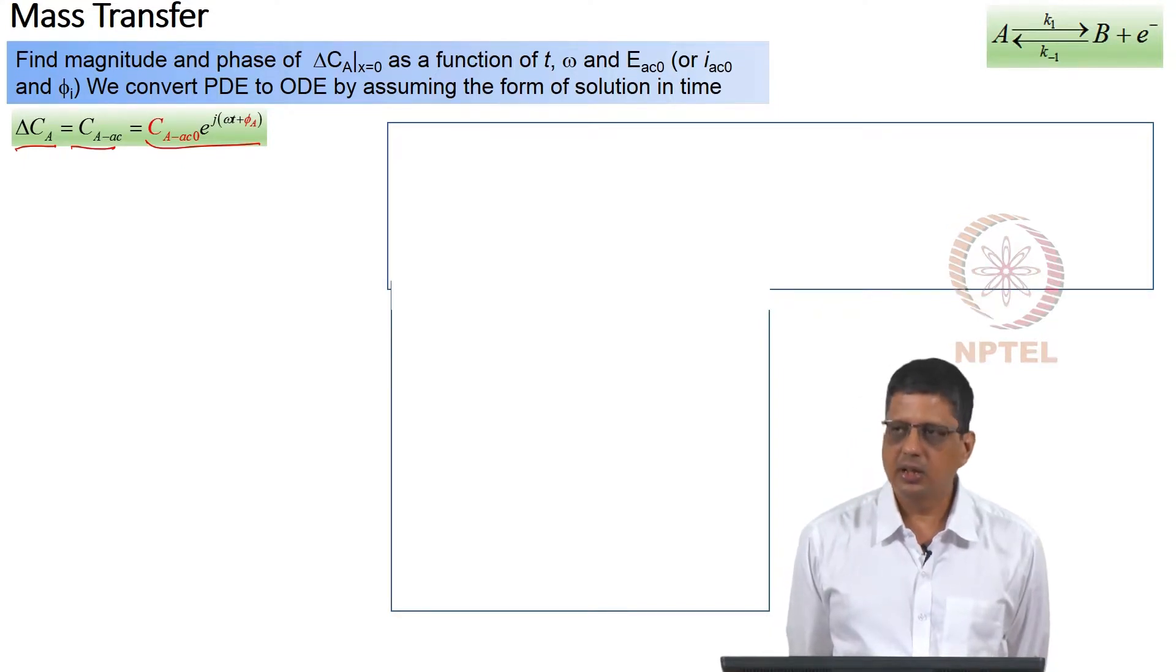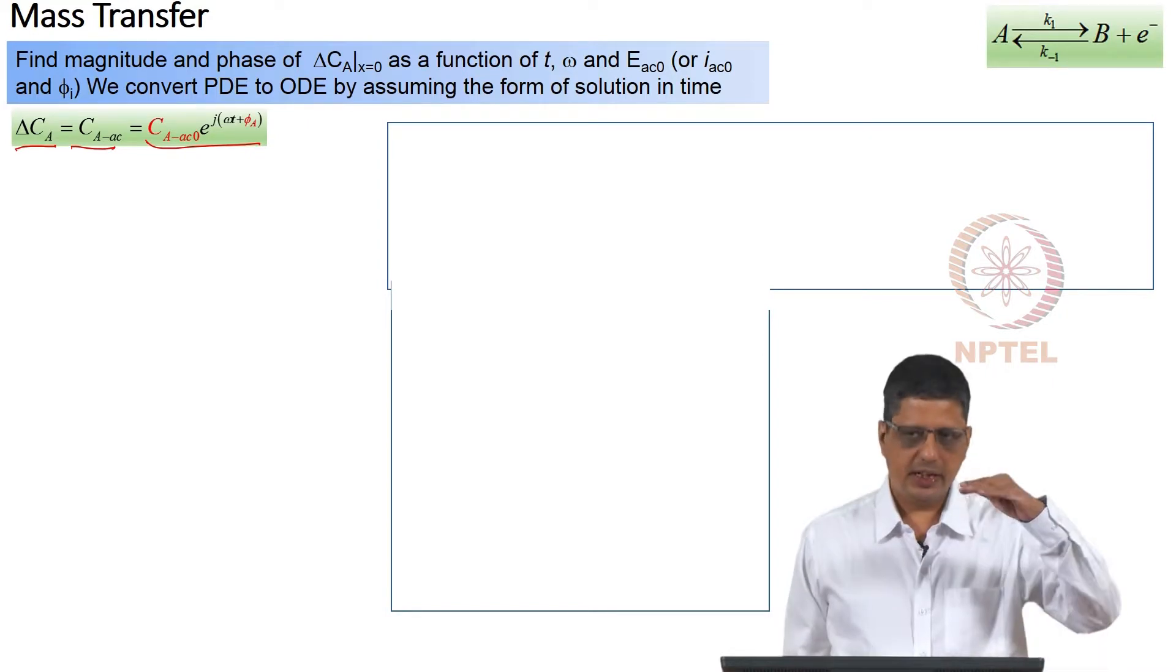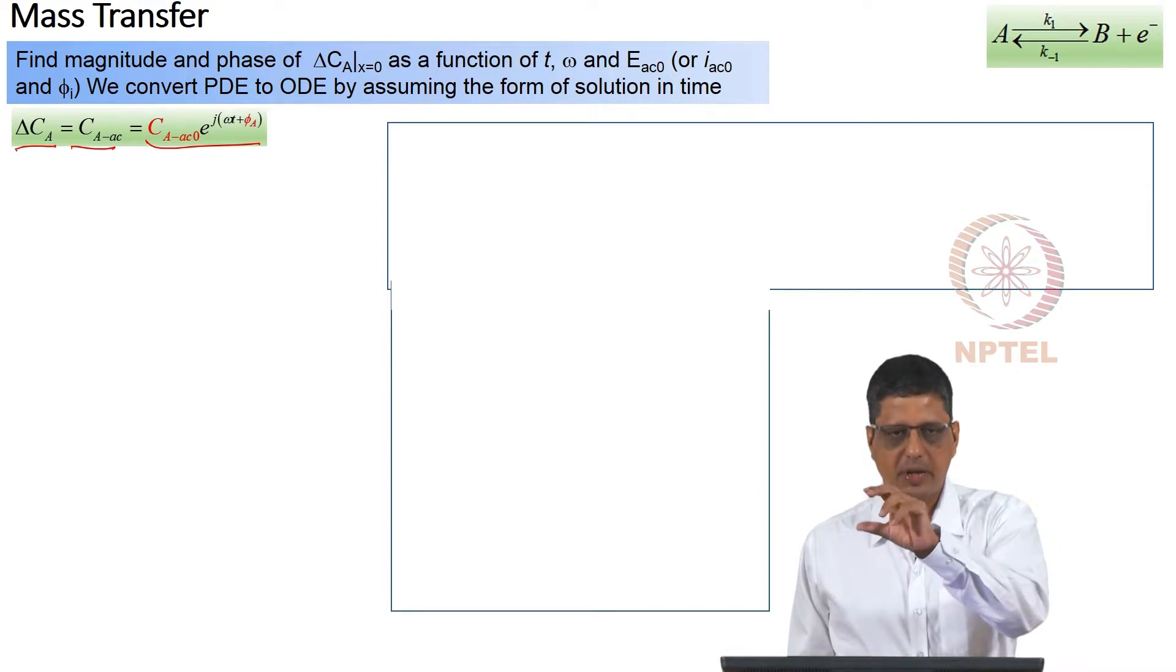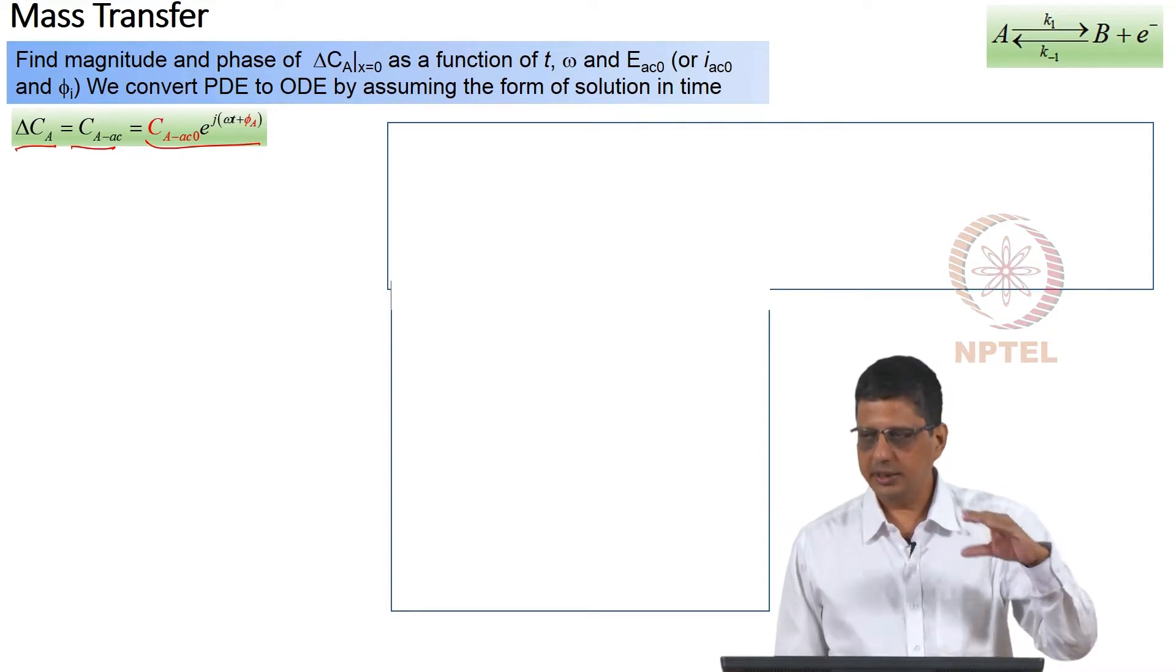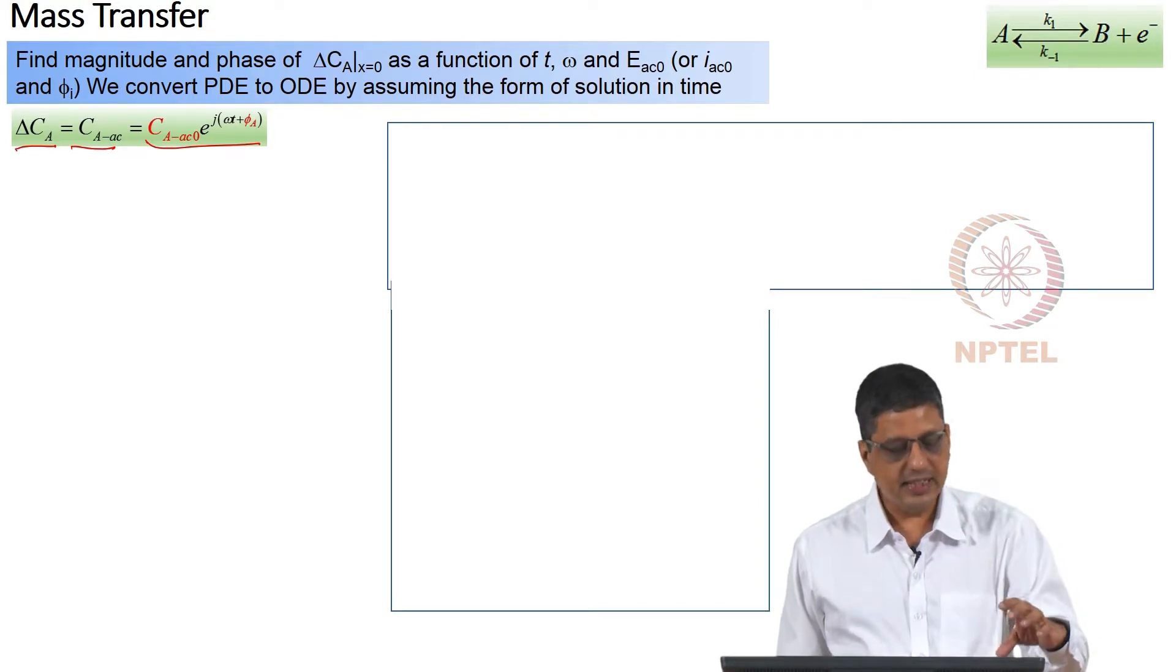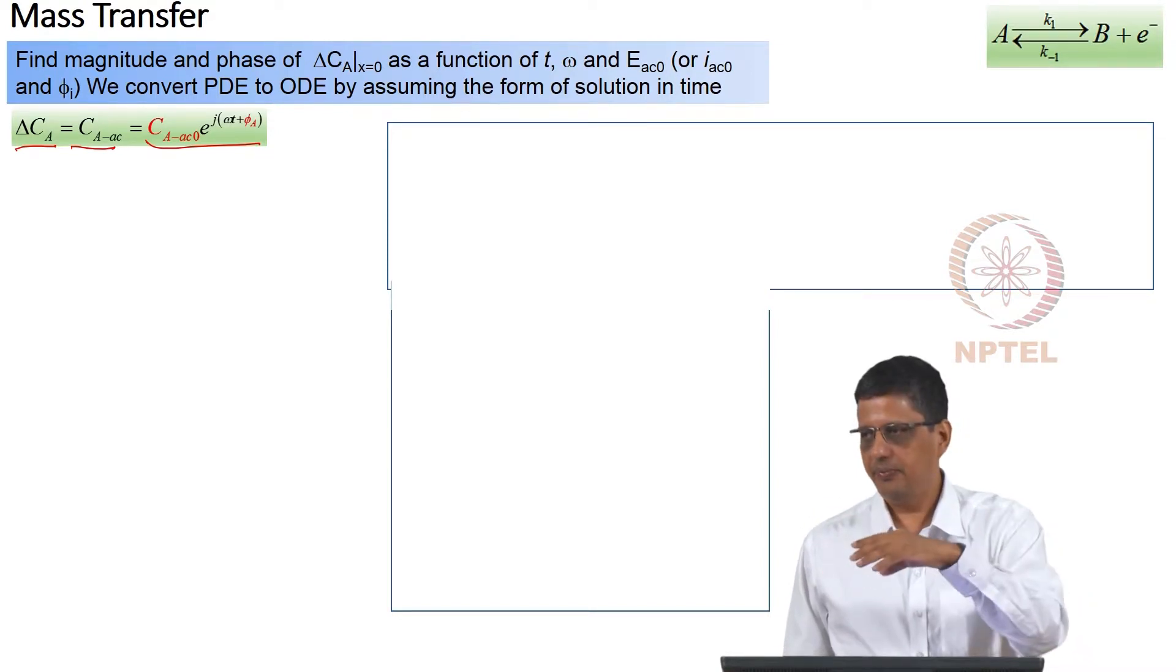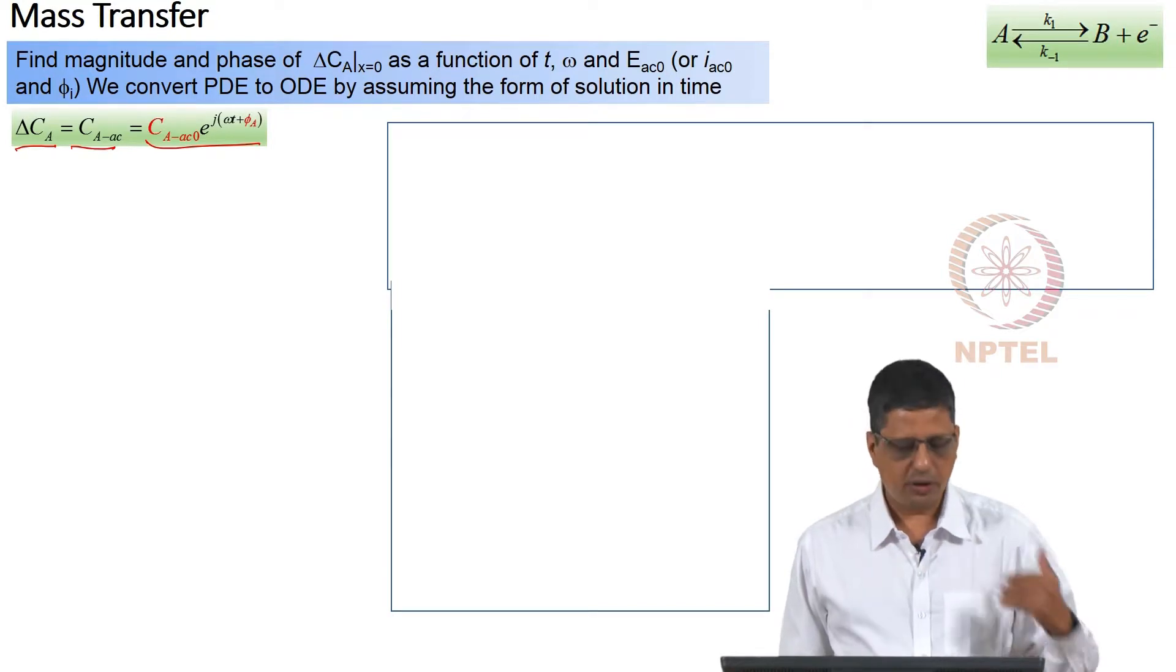Concentration of A and B, concentration of A and B on the surface will show fluctuation with a frequency of omega. Now concentration oscillation can be written just like we write E_AC_0·sin(ωt + 0 phase). Current will be I_AC_0·sin(ωt + some phase), possibly 0, possibly non-zero. Concentration also we will write it as C_A_AC_0 or C_A_AC_0, C_B_AC_0 concentration of species A and B, sin(ωt + φ_A) and φ_B. Complex notation is easy to solve, so we write it as e^(jωt+φ_A).